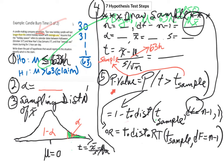Now that you have your t statistic from step four, calculate the p-value or probability value. The p-value is the probability of a test statistic as or more extreme — in this case right-tail — than that observed in your sample. There are two Excel formulas for a right-tail t test: =1-T.DIST(t_sample, n-1, TRUE), or =T.DIST.RT(t_sample, n-1).